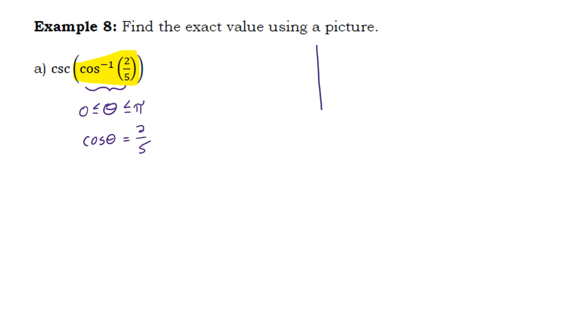What quadrant would that be in? That would be in the first quadrant, right? Because the cosine is positive and the cosine needs to be two-fifths. So let's think about this using x over r. Instead of the unit circle, let's make it a radius five.